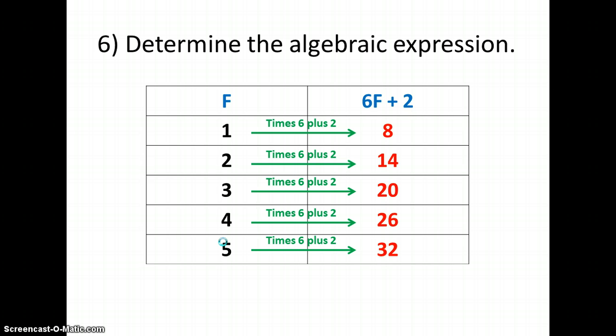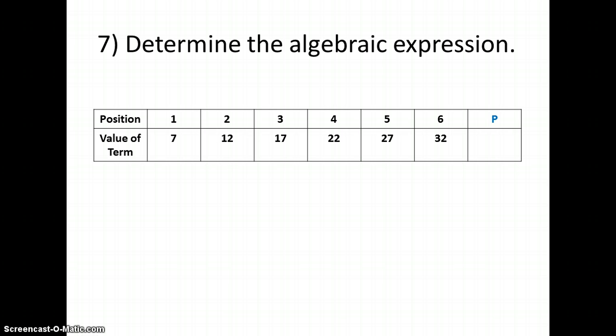This table looks a little different because it's going horizontally. But we're going to treat it the same way. On my position row, I notice that I am still increasing by 1 each time. So to find P, I need to look at my value of the term and notice I'm adding 5 each time. So that tells me I'm going to have a 5P.